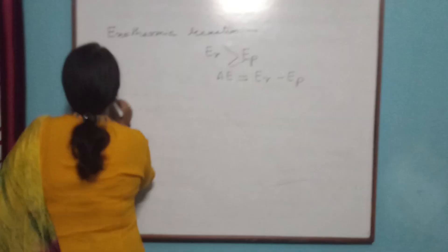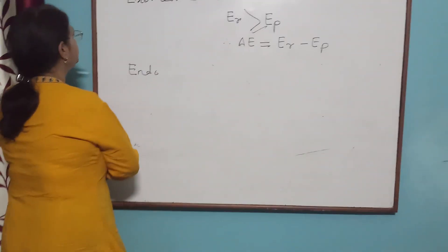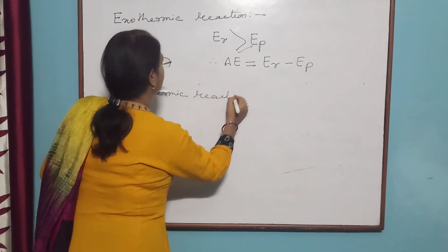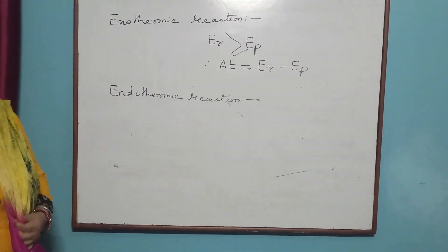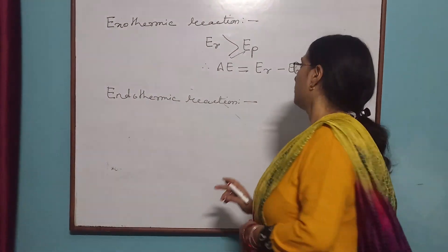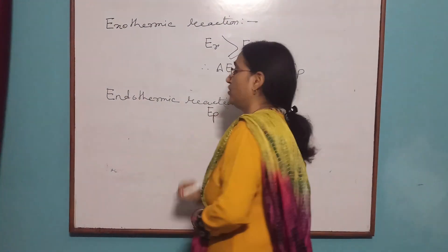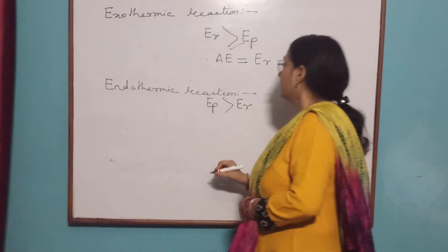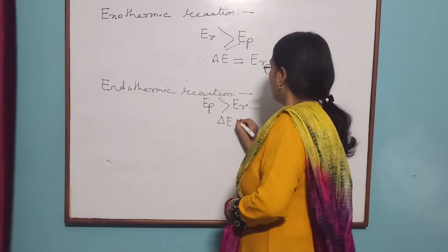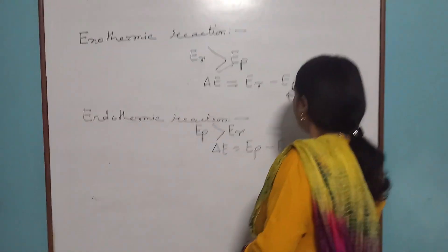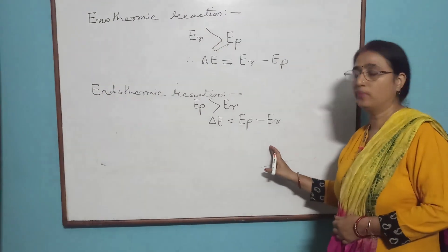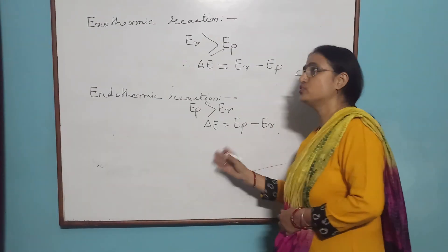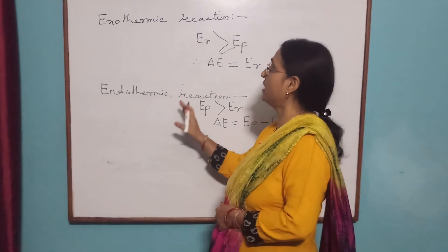What is endothermic reaction? Those chemical reactions in which the internal energy of product, denoted by EP, is greater than the internal energy of reactant — then the difference in energy is given by EP minus ER. This difference in energy is absorbed, and such a reaction is known as an endothermic reaction.